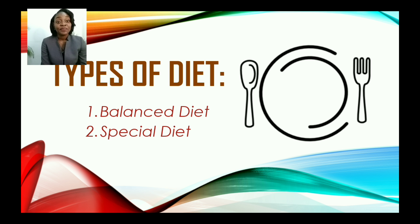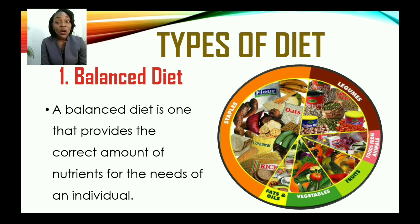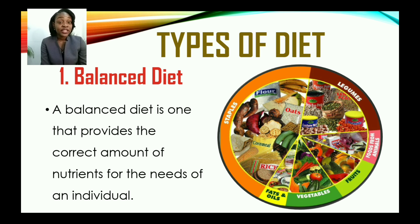We're going to focus on two types of diet today: balanced diets and special diets. A balanced diet is one that provides the correct amount of nutrients for the needs of an individual, or one that consists of foods from all the food groups in their correct proportion. Here we have an image of the six food groups: staples, legumes, food from animals, fruits, vegetables, and fats and oils.